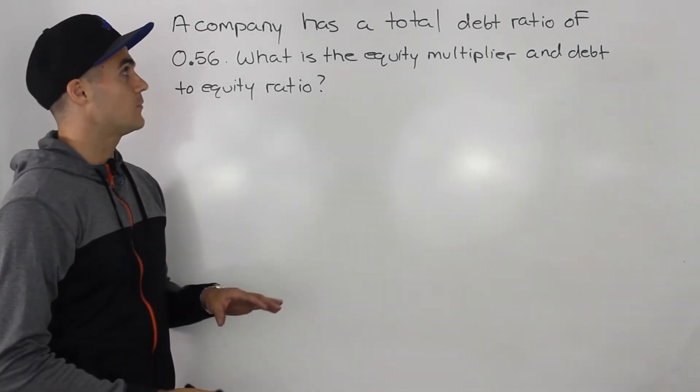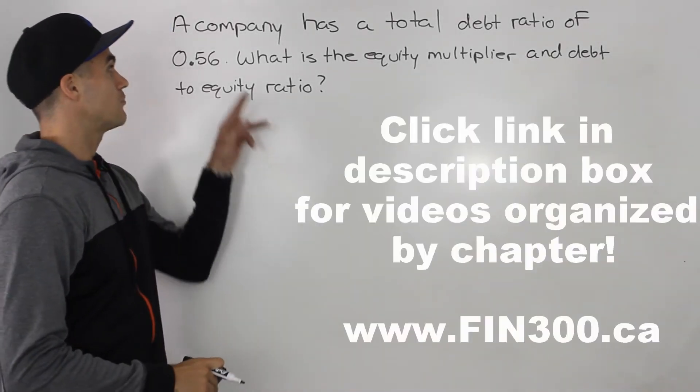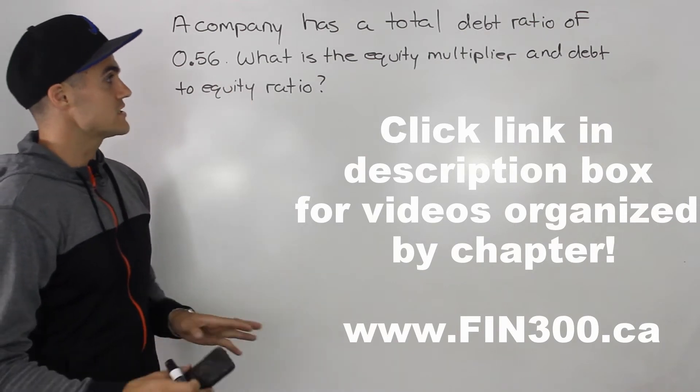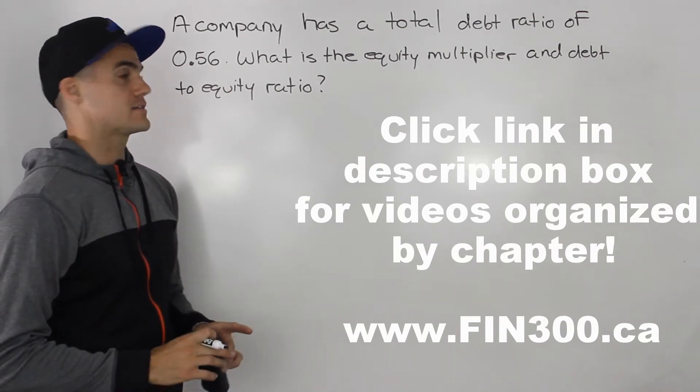Moving on to the next question. A company has a total debt ratio of 0.56. What is the equity multiplier and debt to equity ratio?